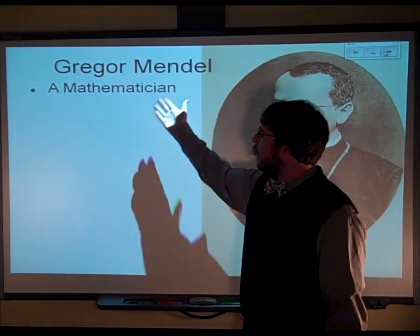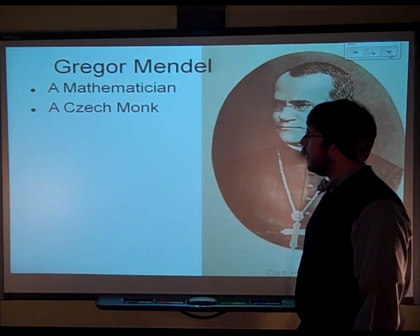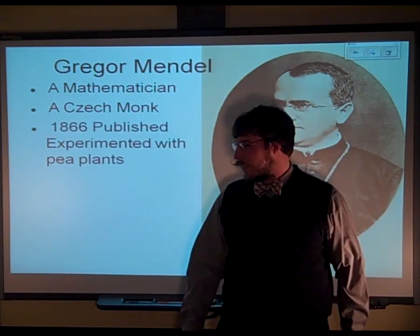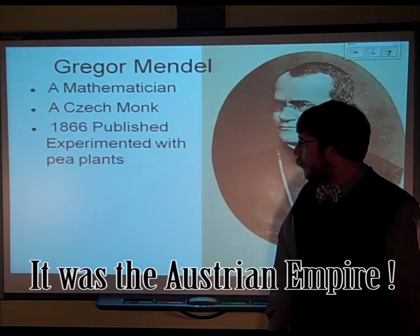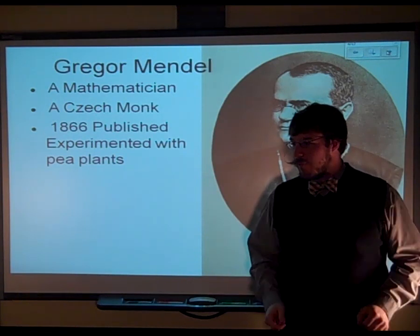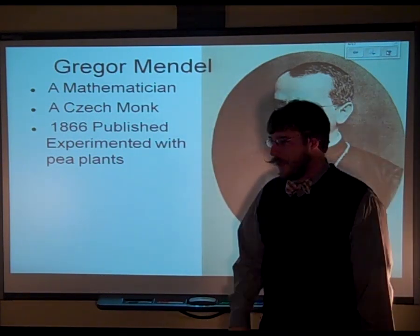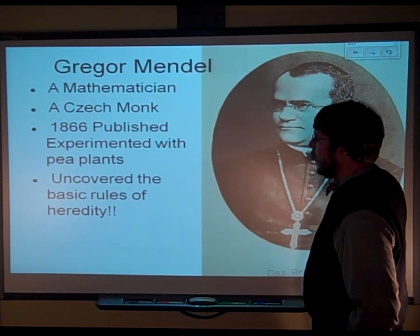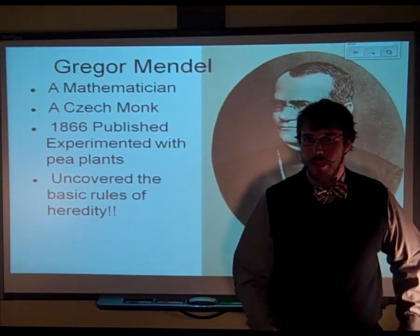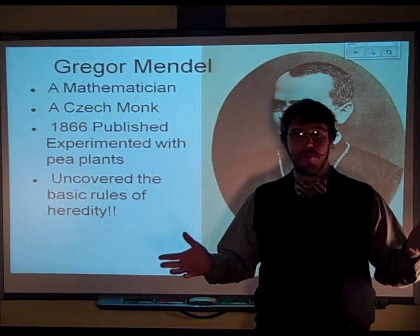He did it because he was a big old math nerd. He was just out there in Czechoslovakia — or what was Czechoslovakia before it was Czechoslovakia — just being a monk, growing little plants, loving math. And based on the things that he learned in math, he actually uncovered the basic rules of heredity just out of growing plants, seeing patterns, thinking like a scientist, and applying his mathematical skills.